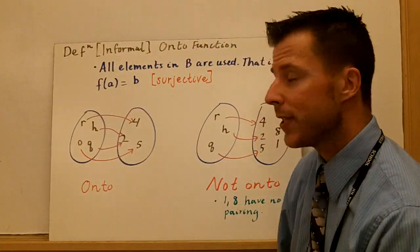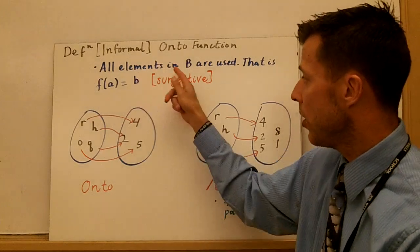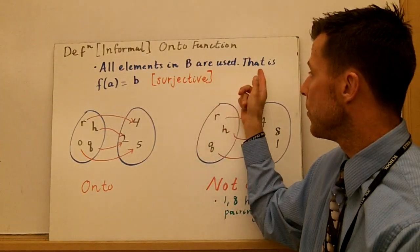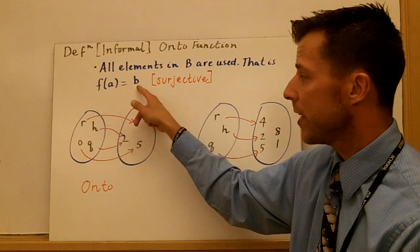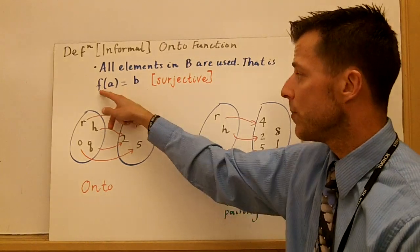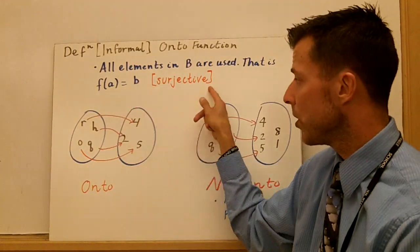Now, the informal definition of an onto function, all elements in B are used. That is, f of A equals B, and this is what we call surjective.